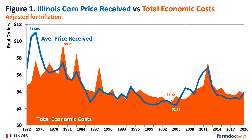The nominal high cost was $7.50 per bushel in 2012, while the nominal low was $1.12 per bushel in 1972. When comparing the differences in prices received and total economic costs, the early 1970s was the period of highest economic returns per bushel, while the period of the mid-1980s was the lowest period in real dollars.